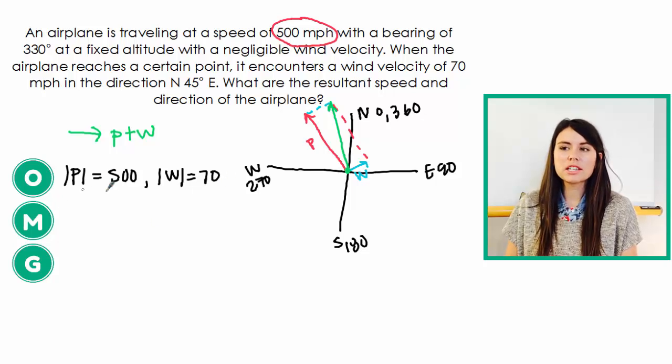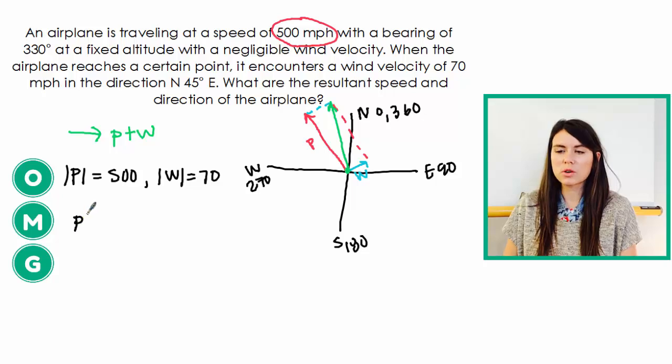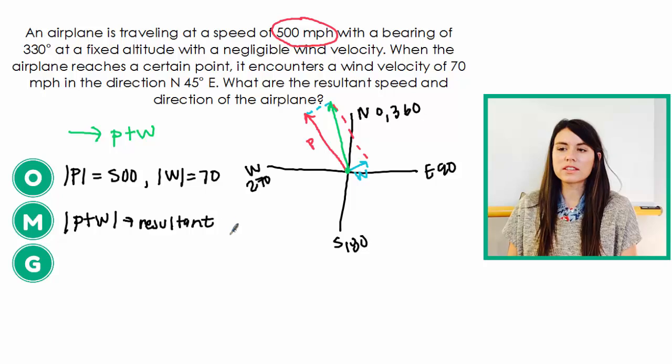And then our mission is to find the resultant speed and direction of the airplane. So that's the green vector. So we're trying to find its resultant speed. So the resultant speed is going to be the magnitude of this vector. So if I can figure out the magnitude of this green vector here, that is the resultant speed.